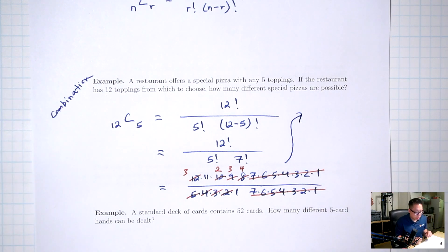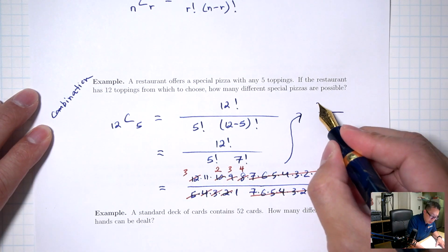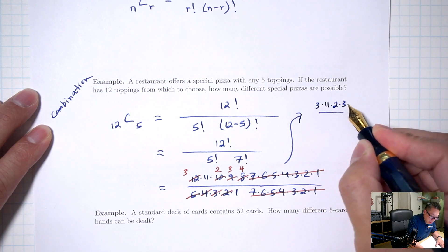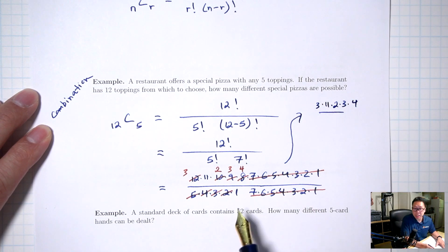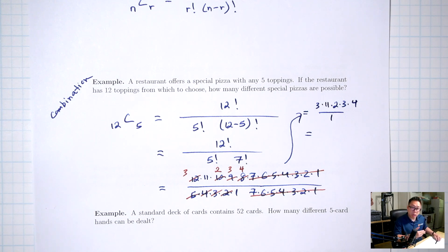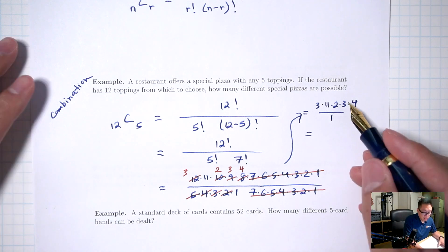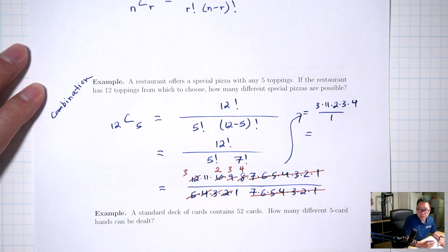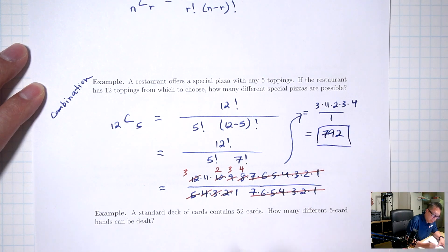Let's do the first example using the formula by hand. A restaurant offers a special with five toppings. If the restaurant has 12 toppings to choose from, how many different special pizzas are possible? I have 12 toppings and I'm choosing five. Notice this is a situation where the order does not matter — the order you choose these five toppings doesn't matter because they all go on your pizza. So this is a combination.